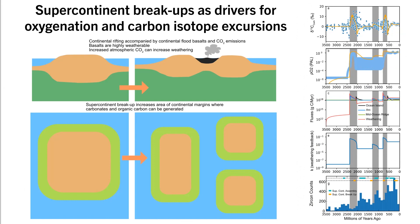I'd like to wrap up by talking about how this process is related to tectonic cycling. On the right, there is a panel at the bottom that shows zircon count through time. Zircon is a mineral that is predominantly produced at convergent margins; therefore, times of high zircon production are thought to signal supercontinent formation, while times of low zircon production signal supercontinent breakup. The vertical gray bands encompass all periods of enhanced weathering in the model, and we can see that all high weathering periods initiate during troughs in the zircon record, suggesting that supercontinent breakups may be driving periods of enhanced continental weathering.